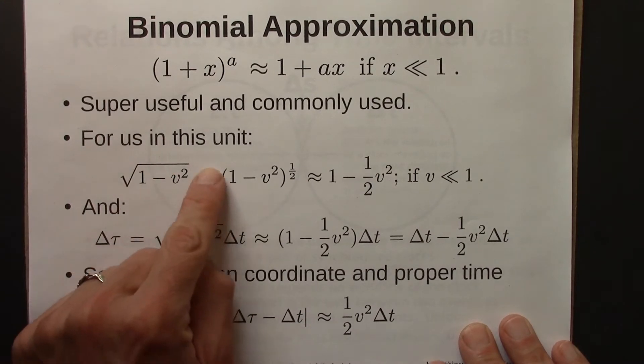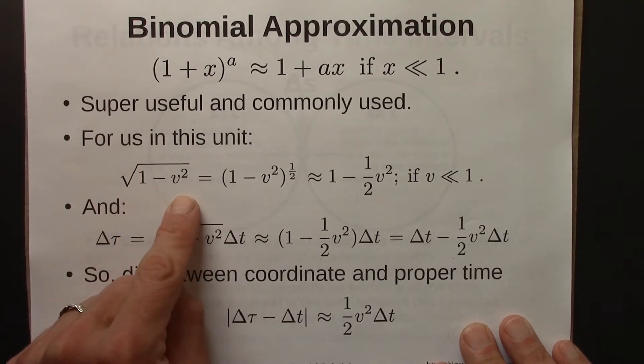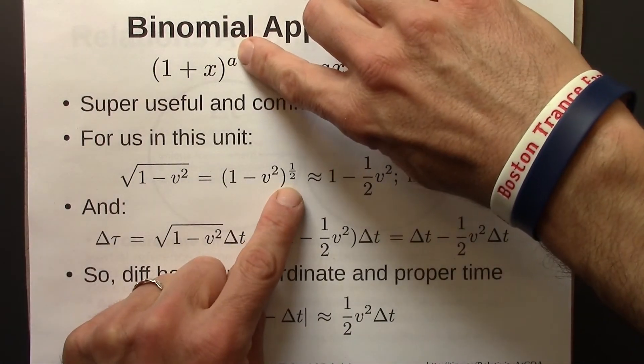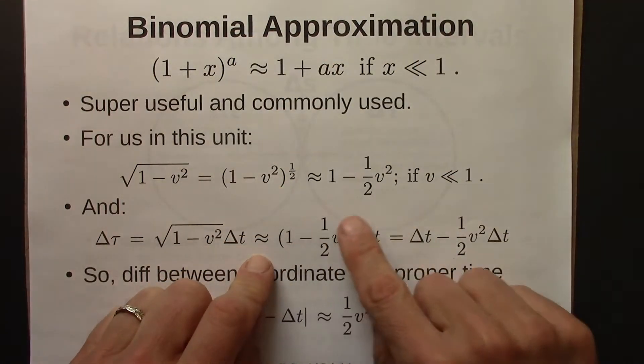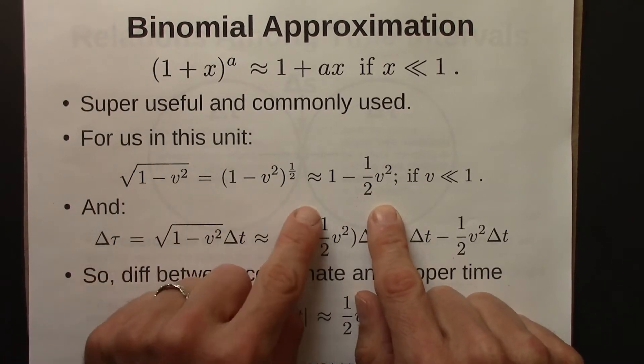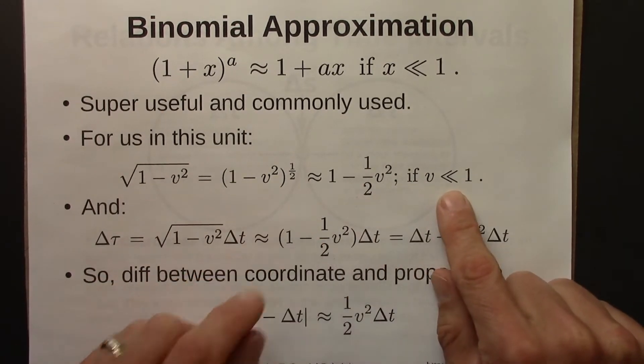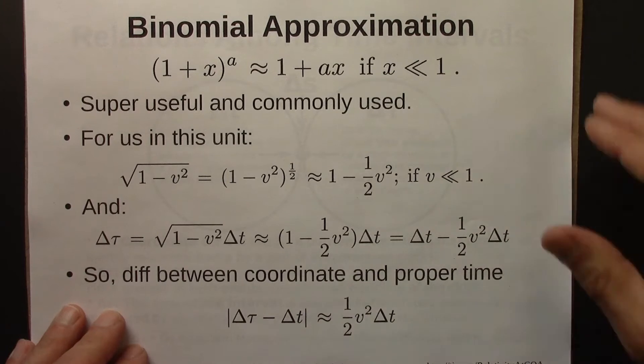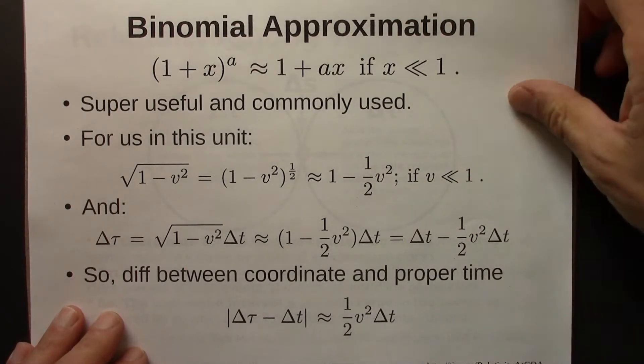So the way we use this was we have this expression, 1 minus v squared, square root. And square root is the same as a half power. So then for a, I have half. And for x, I have v squared. So we have this. This square root is roughly 1 minus half v squared, as long as v is much less than 1. As long as the object in question is moving at a very small fraction of the speed of light.